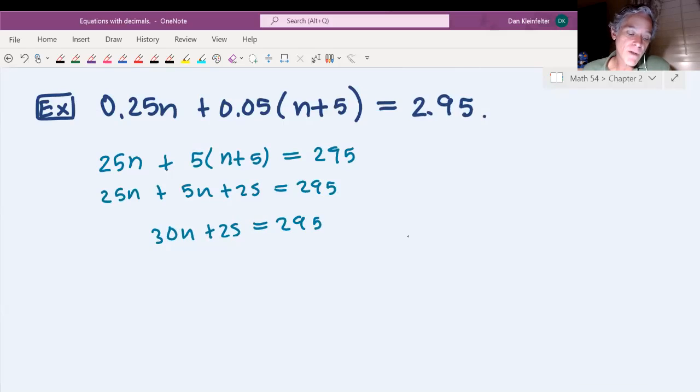And then we should subtract 25 from both sides. So 30n is 270. So the n is going to be 9 after all that. All right.